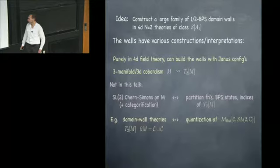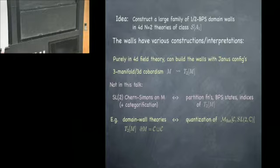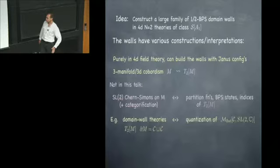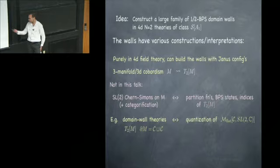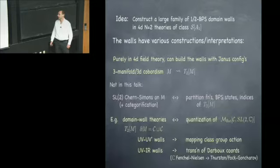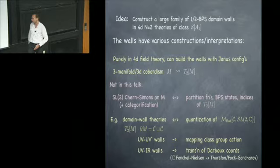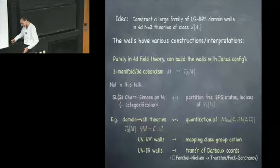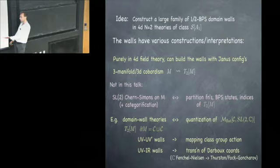In the present context, if one builds a theory associated to one of these domain walls where the manifold has two boundaries that are both the surface C the 4D theory is based on, one gets on the geometric side a quantization of the moduli space of flat SL(2) connections on the surface C. The 3D geometry itself corresponds to various actions on this moduli space: walls between different UV weak coupling regions generate a mapping class group action, whereas walls between UV and IR regions give transformations between distinguished sets of Darboux coordinates — such as Fenchel-Nielsen coordinates and Fock-Goncharov type coordinates.